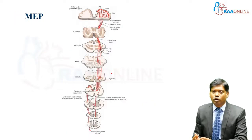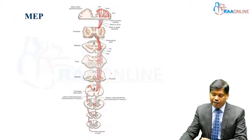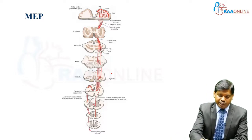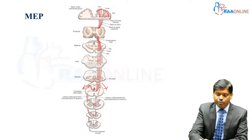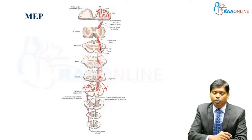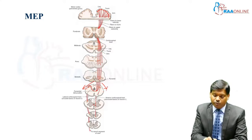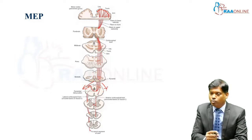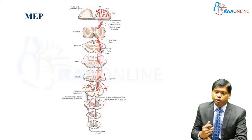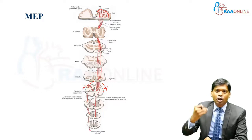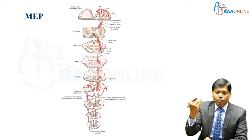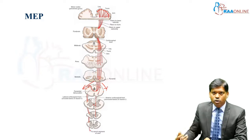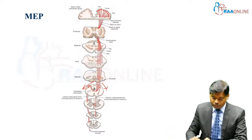The corticospinal tract, at the level of the medulla or pyramid, divides into lateral and anterior components: 80% of the fibers pass laterally and 20% pass anteriorly. This tract is also called the motor tract, the corticospinal tract, or the pyramidal tract, and it is responsible for impulses traveling from the brain down through the spinal cord to the muscles.